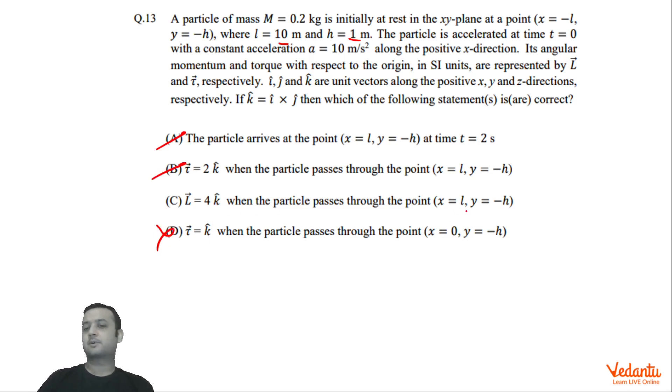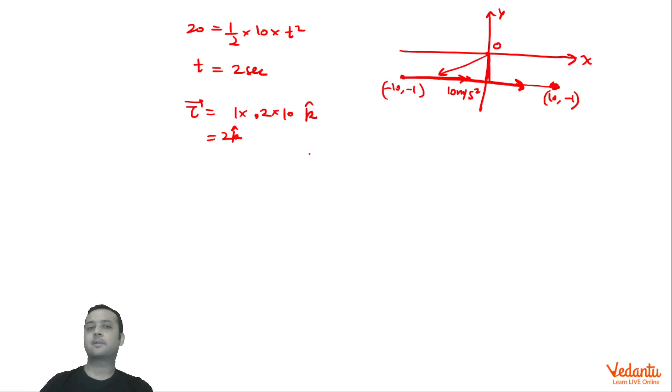Angular momentum when the particle passes through the point l, -h. Again we are talking about this point. This time angular momentum. Angular momentum can be again written as m×v×r. So m is 0.2. Actually, torque direction and angular momentum direction same in this particular case. In this case, initial angular momentum is 0. So torque creates angular momentum. So we can say that this becomes 4k cap.